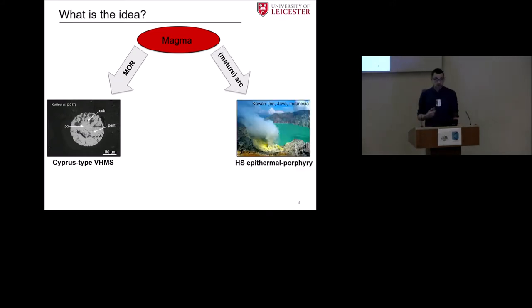On the other end, when we have magma degassing, for example, in mature arcs, then we can get something like this active example from Java. We have high sulfidation epithermal porphyry systems. And if those two affect submarine island arc systems, then they probably should be somewhere in between.